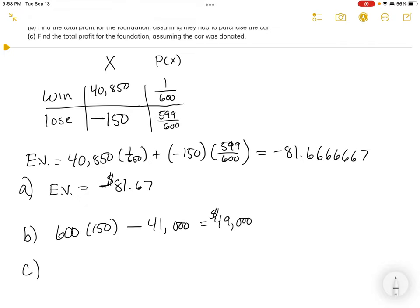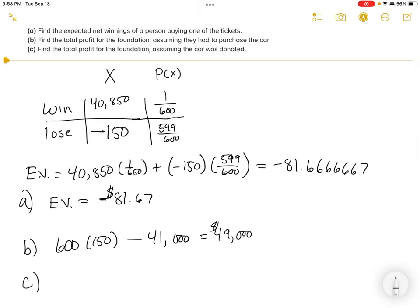Part C says find the profit for the foundation, assuming the car was donated. If the car was donated, they no longer need to do the subtraction. The profit will be the money from ticket sales, which is 600 times 150, giving us a $90,000 profit.